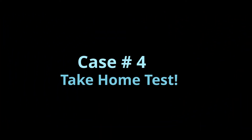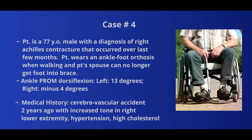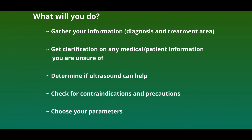We've included one additional case for discussion with your colleagues. This case involves a 77-year-old male patient who had a stroke two years ago. The stroke has left him with increased tone in his right lower extremity, which has led to an Achilles tendon contracture. The patient is able to ambulate using a cane and an ankle foot orthosis; however, due to the contracture, his spouse has difficulty getting his foot into the brace. Our therapy goals include improving right ankle dorsiflexion range of motion to allow him to wear his AFO. When deciding whether ultrasound is appropriate, run through your five questions and see where the information guides you.